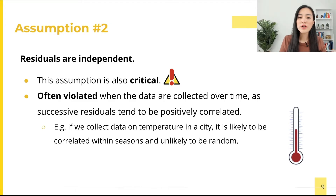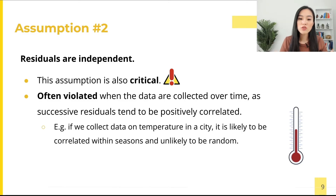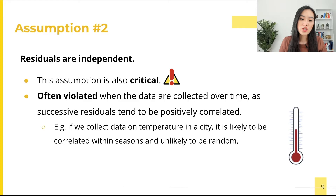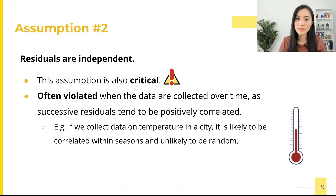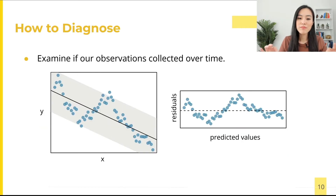The second assumption of linear regression is that the residuals are independent. This assumption is also critical but often violated when data are collected over time, such as time series data, as successive residuals tend to be positively correlated. For example, if we collect successive data on the temperature in a city, the temperatures are likely to be correlated within seasons and unlikely to be random.